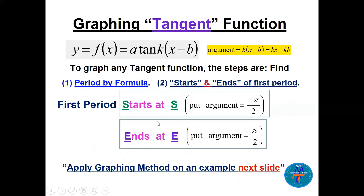To graph a tangent function: identify the correct argument kx − kb, compute the period using pi over k, then find the first period by setting the argument equal to minus pi over 2 to get the starting point S, and setting the argument equal to pi over 2 to get the ending point E.